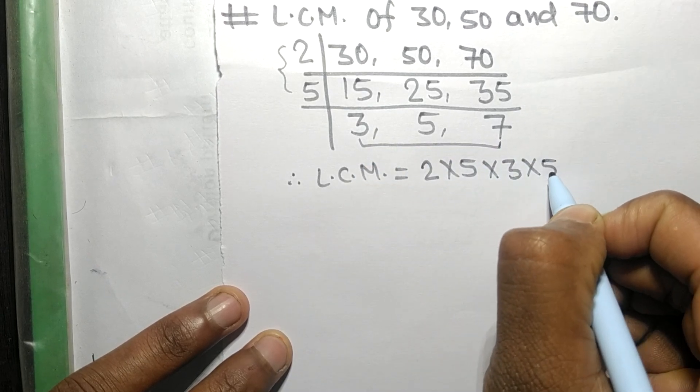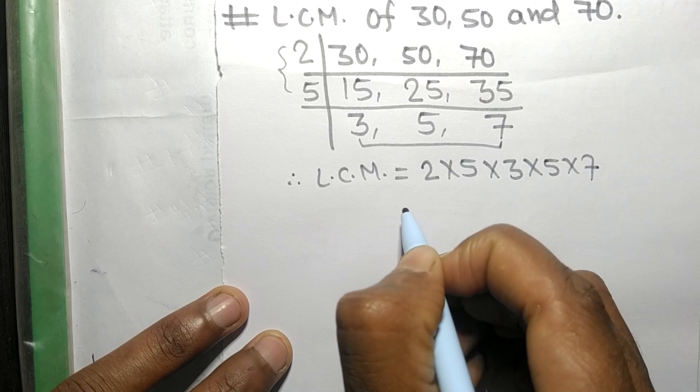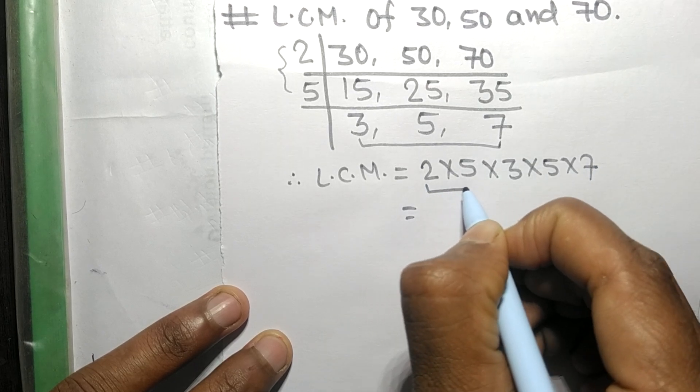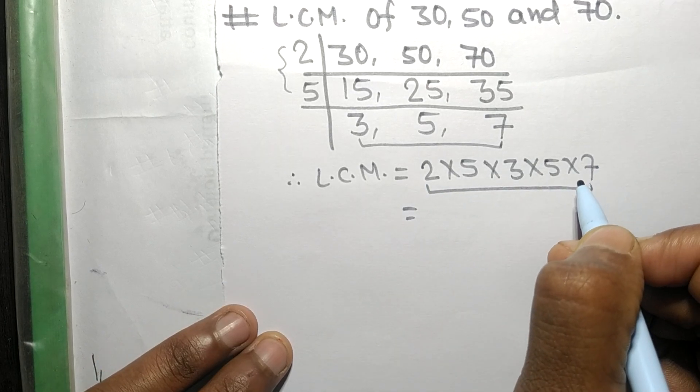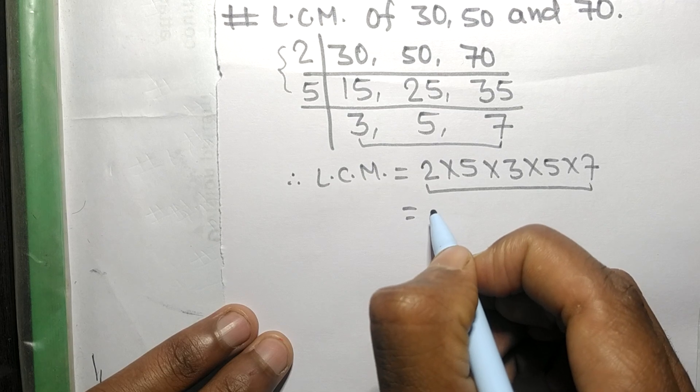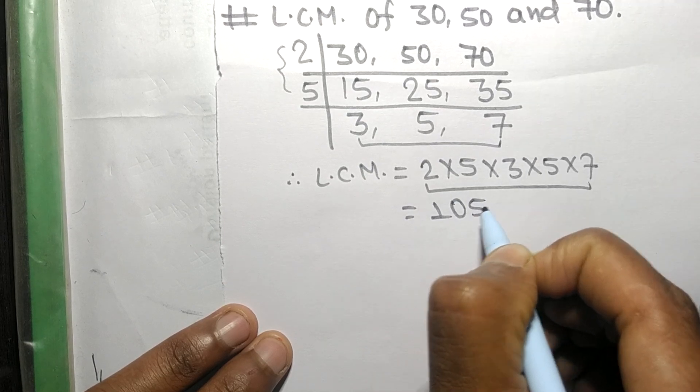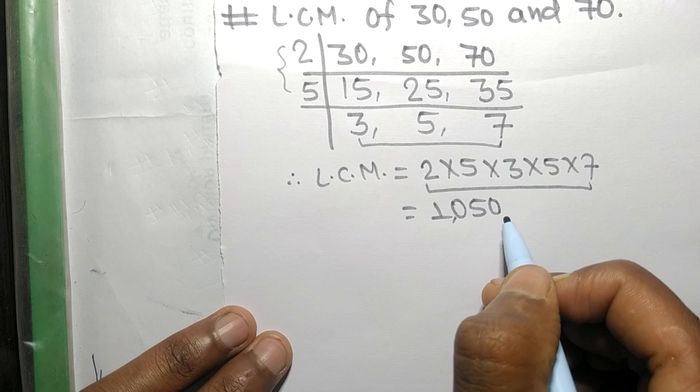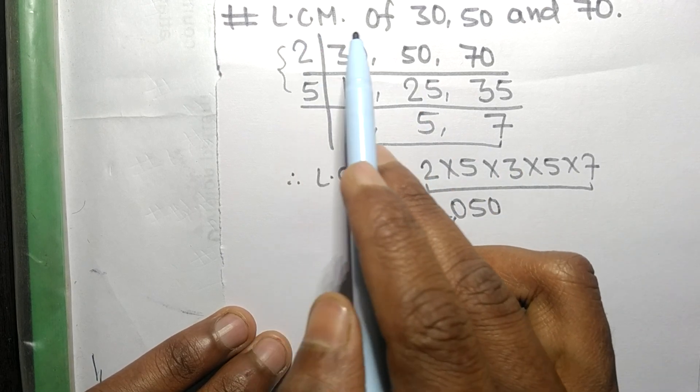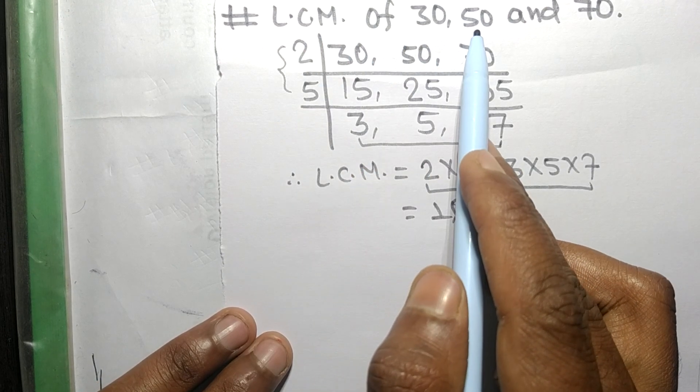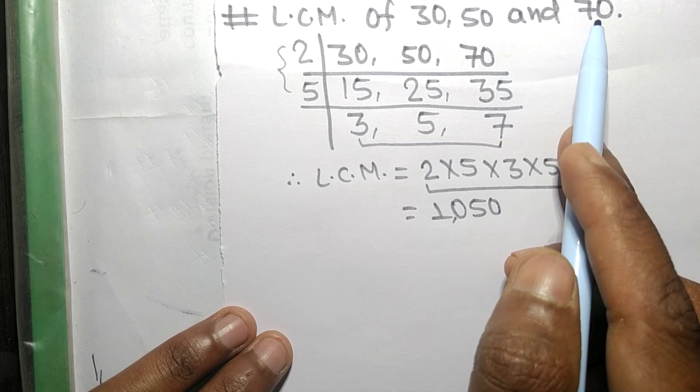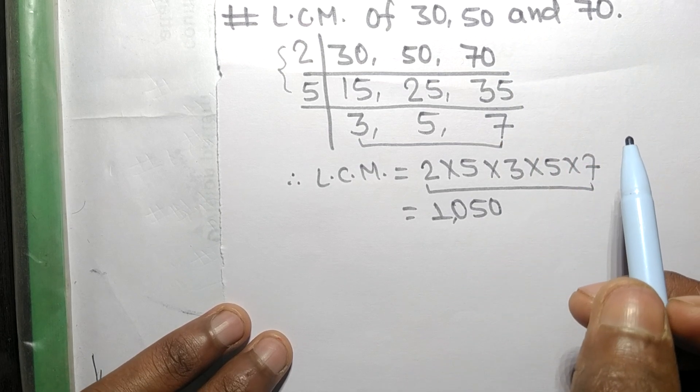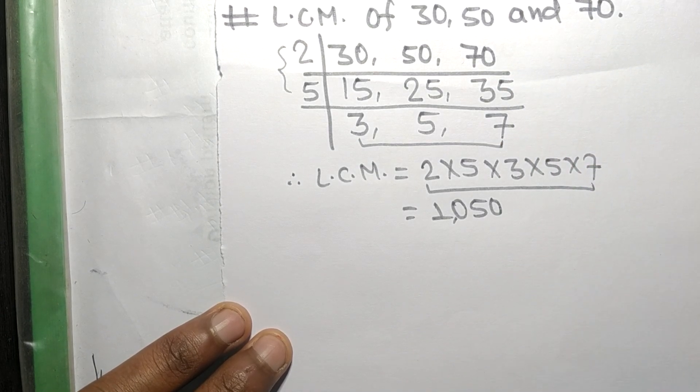When multiplying all these numbers we get 1050. So 1050 is the LCM of 30, 50, and 70. This much for today and thanks for watching.